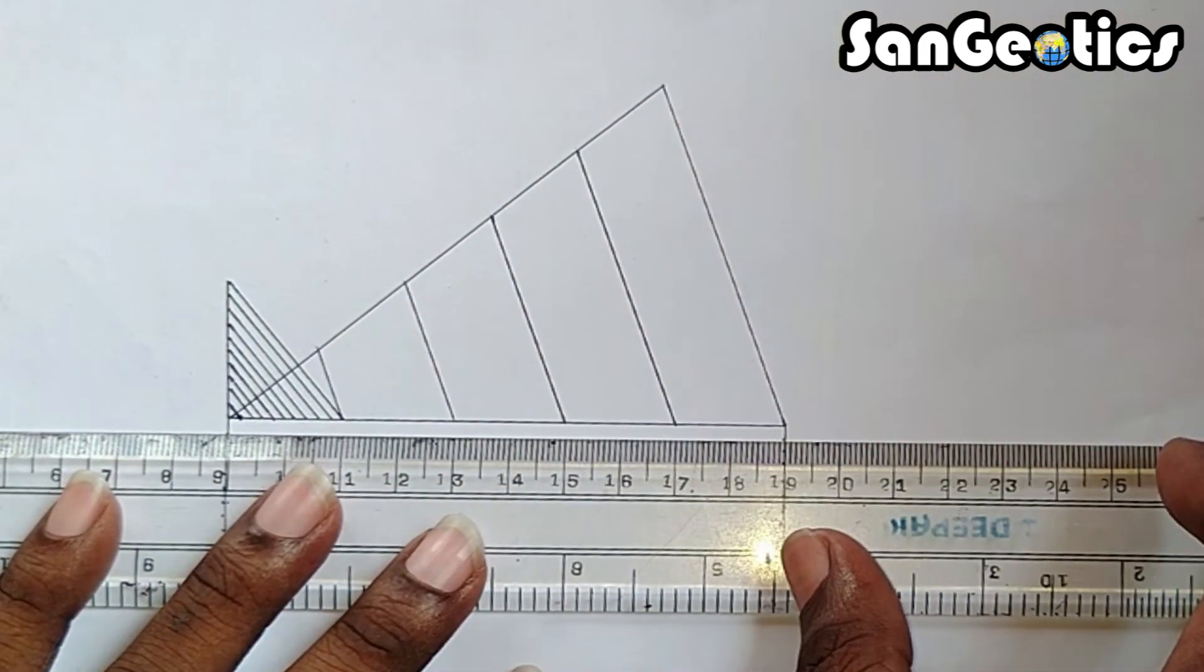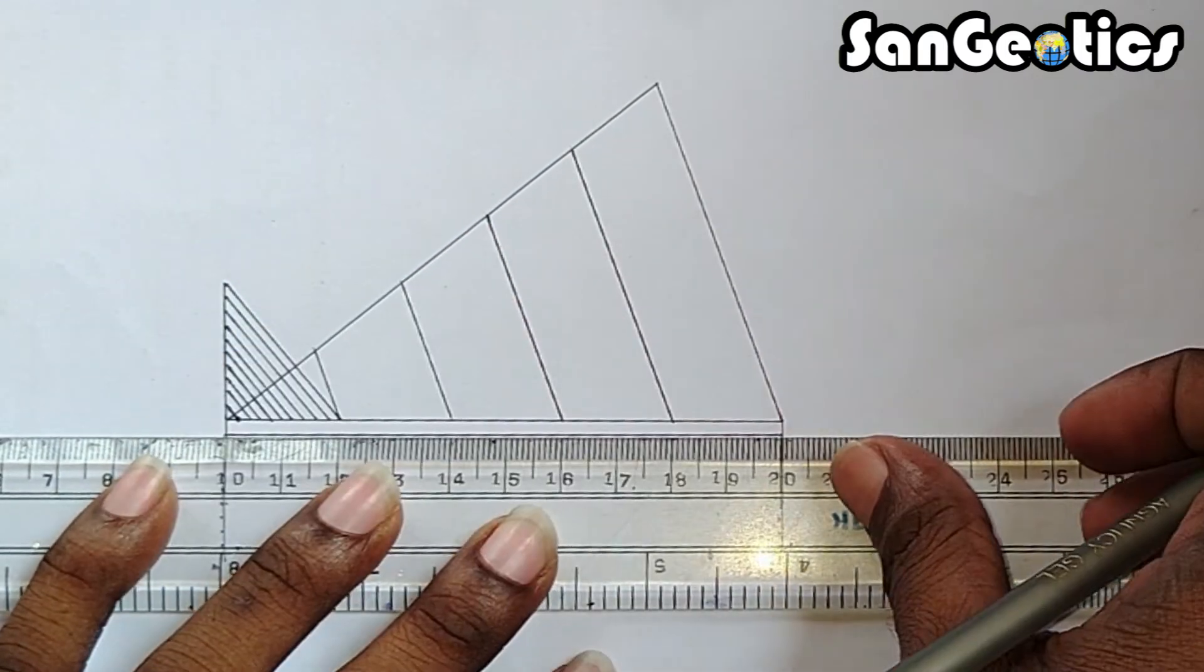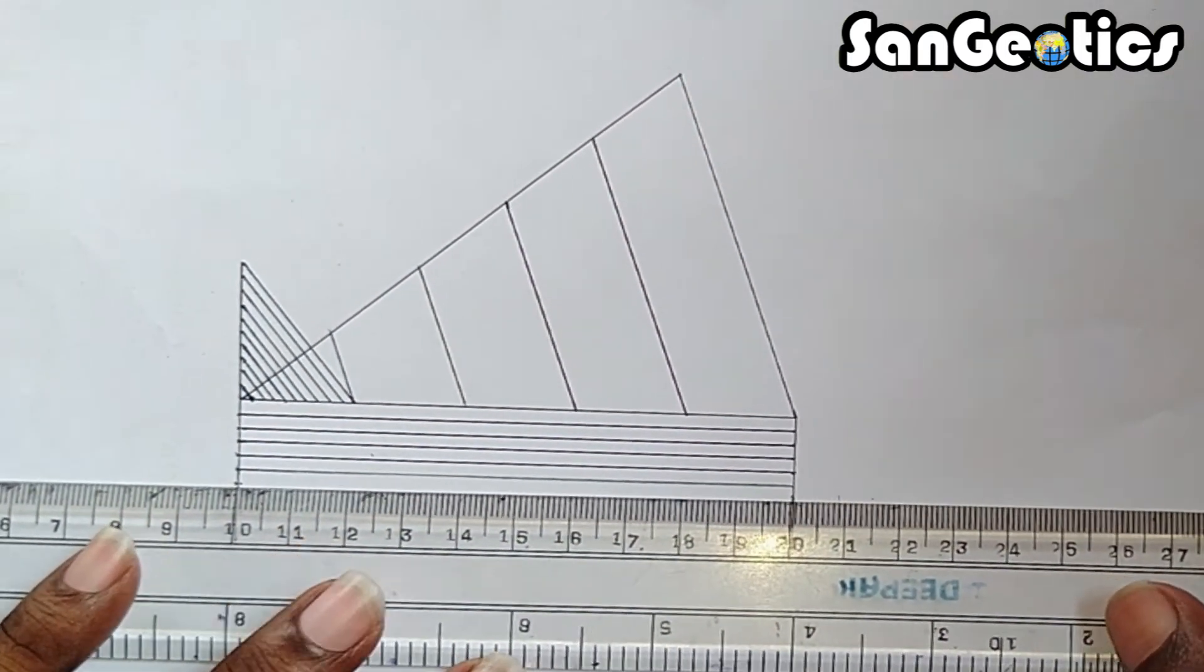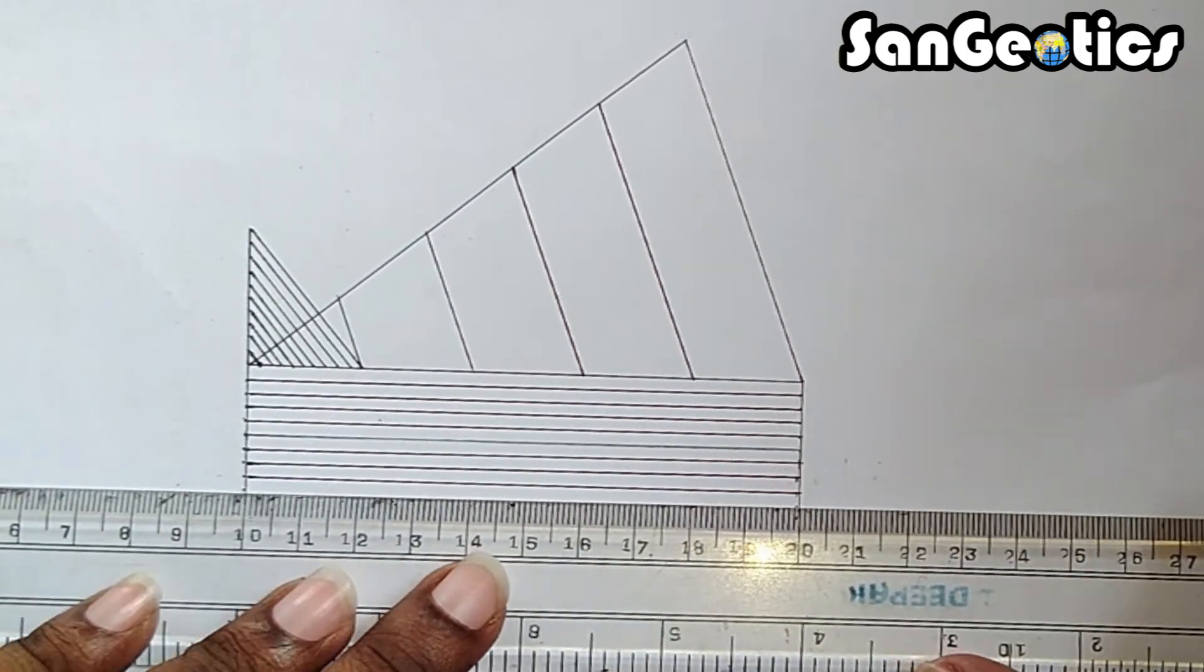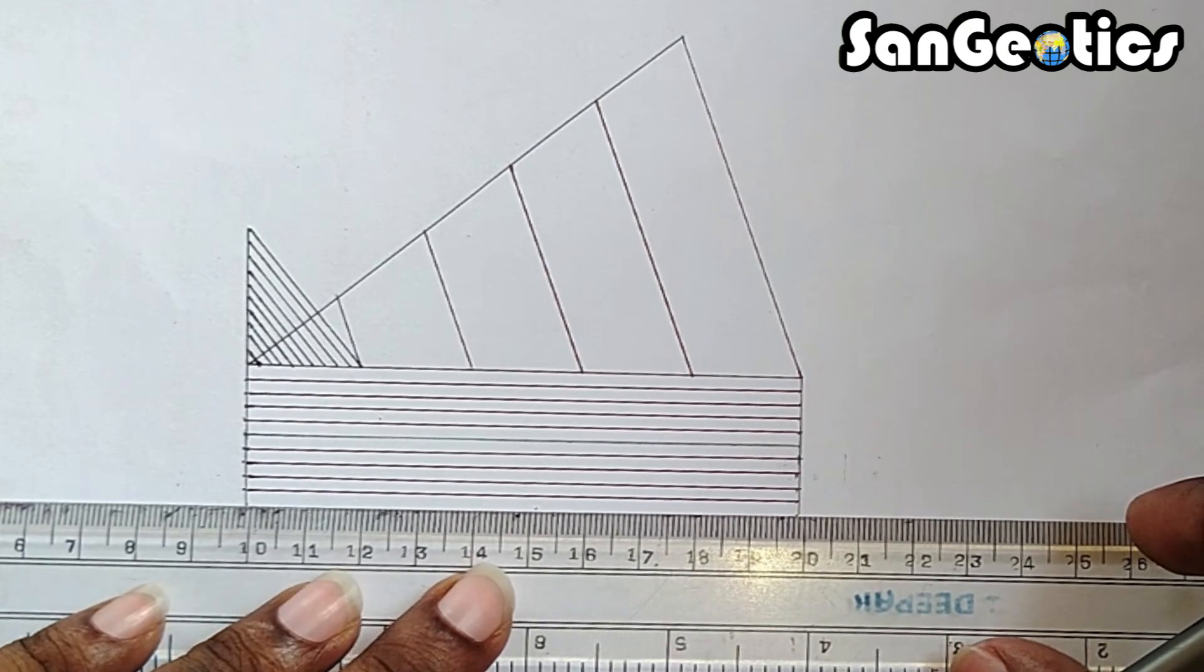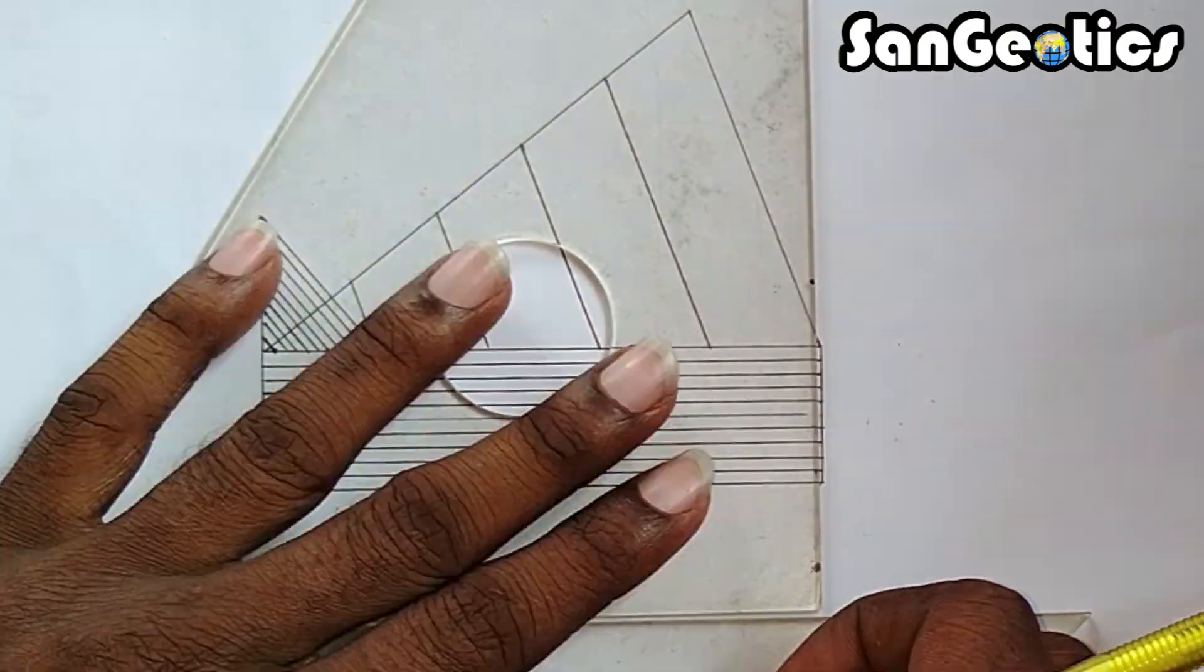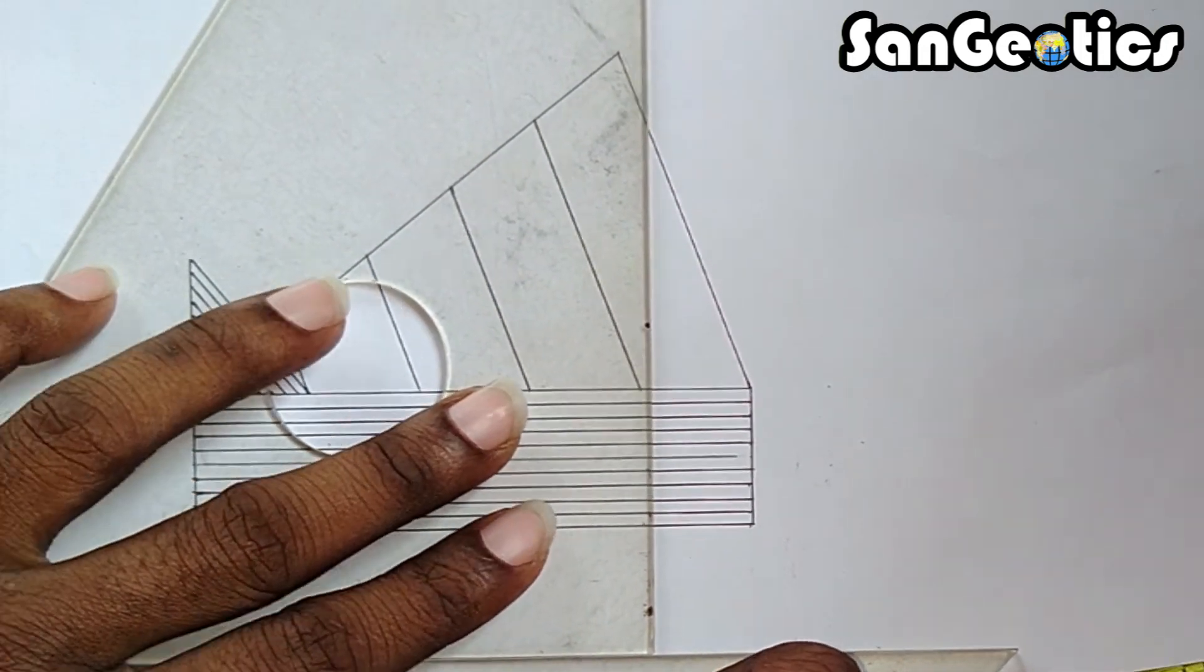And draw horizontal lines, and also draw vertical lines from every primary division points.